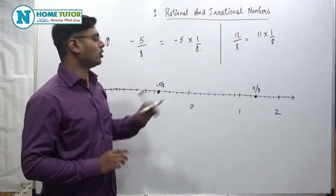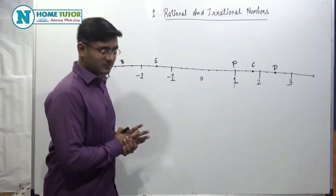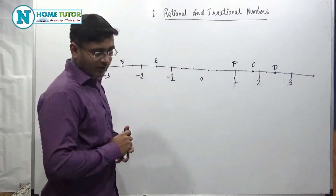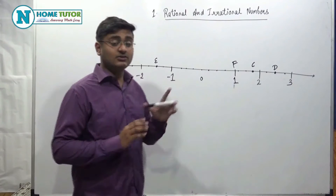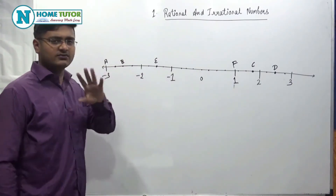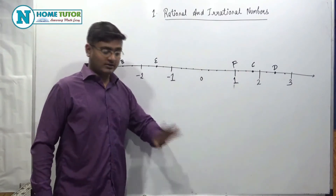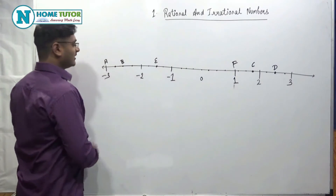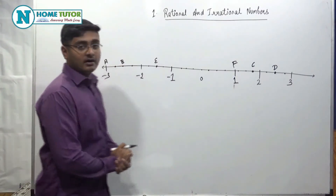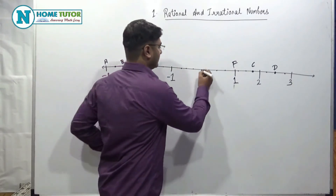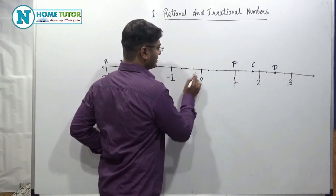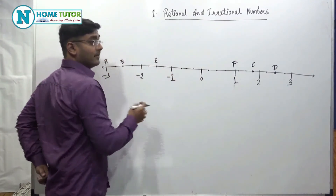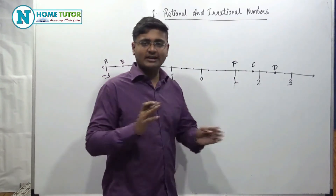In Problem Set 1.1, a diagram of a number line is given. The question says: observe the number line and answer the following questions. The first question asks which number is indicated by point B. Looking at the figure, every unit is divided into how many parts? 1, 2, 3, 4 — every unit is divided into 4 equal parts.